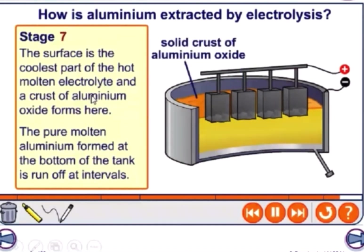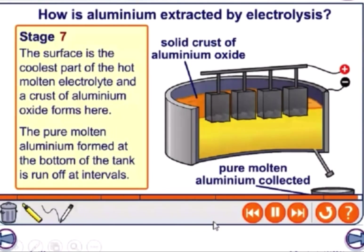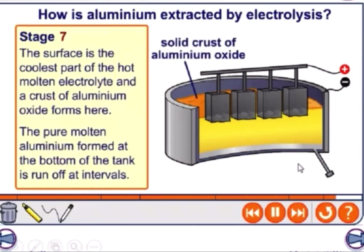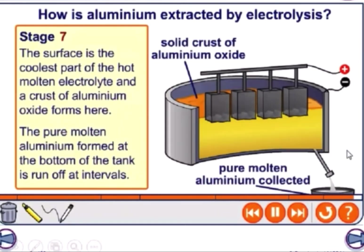In the final stage, the surface is the coolest part of the hot molten electrolyte, and a crust of aluminum oxide forms there. The pure molten aluminum formed at the bottom of the tank is run off at intervals. This is the whole process of extraction of aluminum by electrolysis.